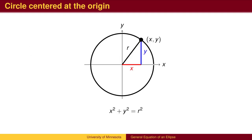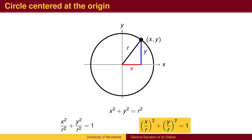Recall that the equation of a circle centered at the origin is x-squared plus y-squared equals r-squared. We can divide both sides by r-squared to get the right-hand side equal to 1, and rewrite the squares outside the parentheses.